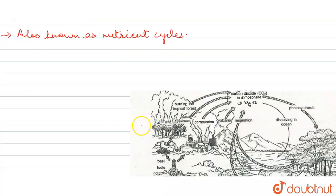Each nutrient cycle can be divided into two compartments: reservoir or cycling. Now we will discuss the carbon cycle.